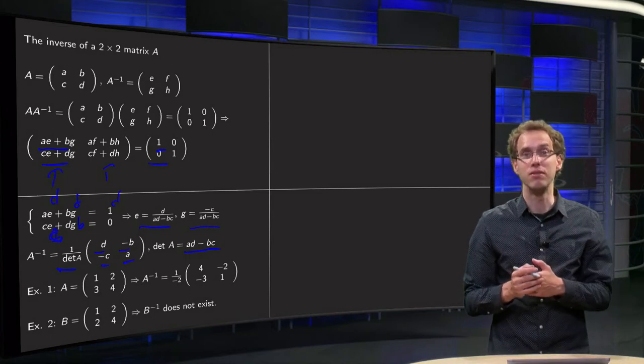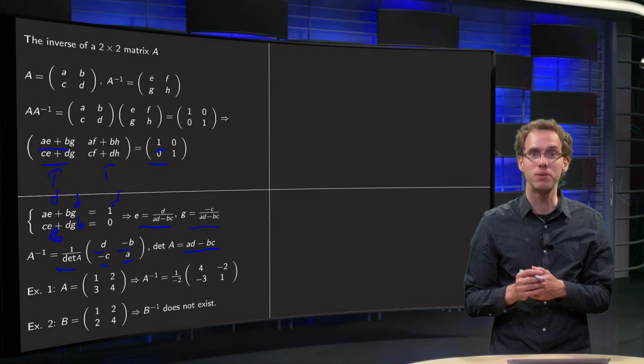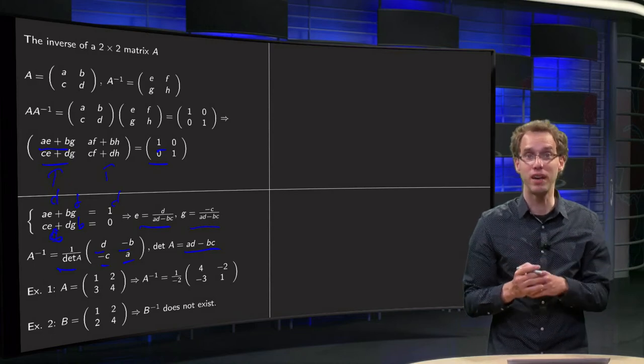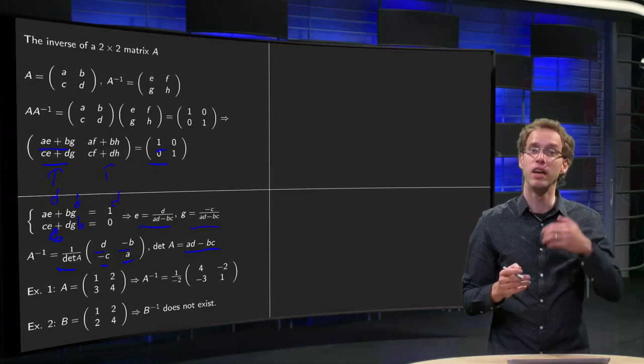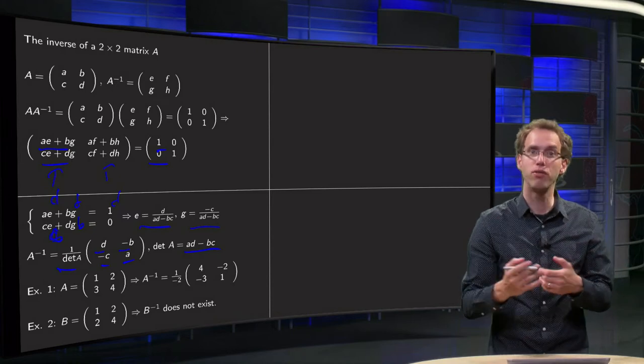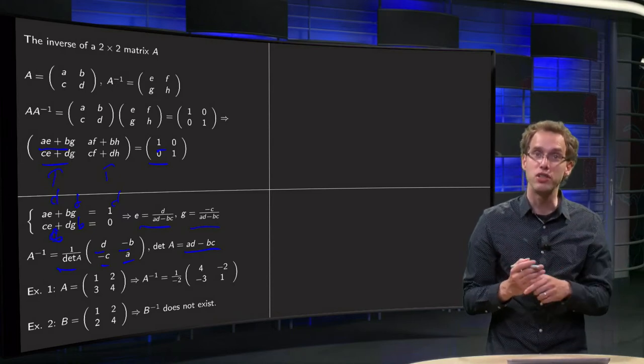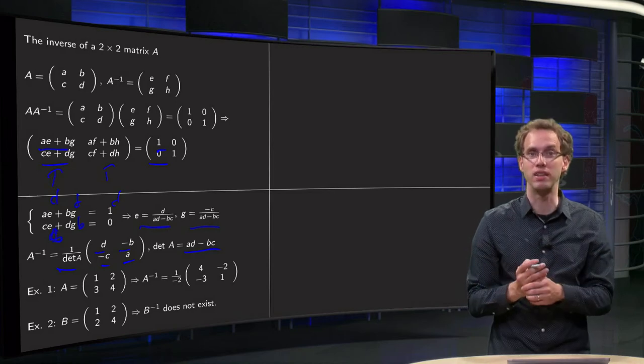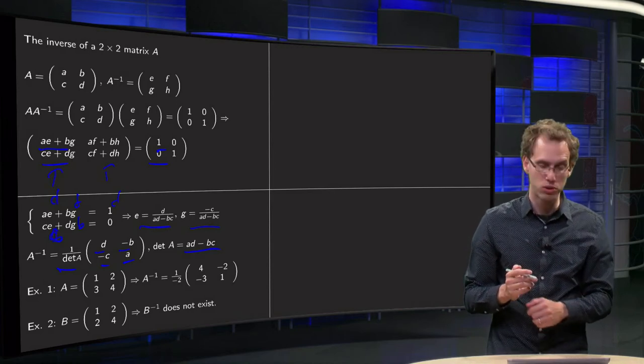So, can you always find the inverse of a 2 by 2 matrix? Well, only if ad minus bc is non-zero. If it is non-zero, then you have the formula, you know your inverse. If it is zero, you know that you cannot find an inverse. So, let's look at two examples.